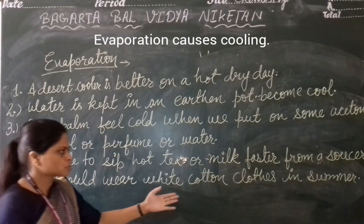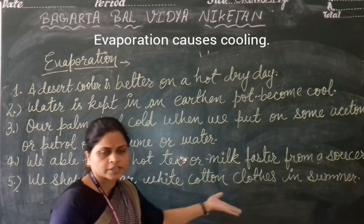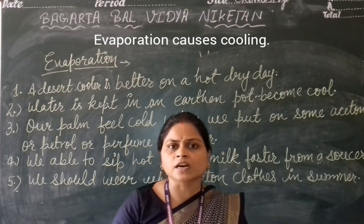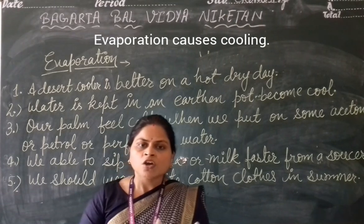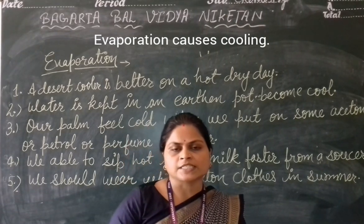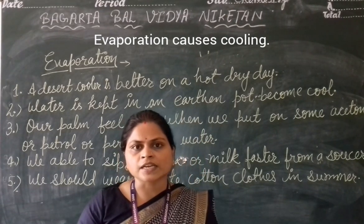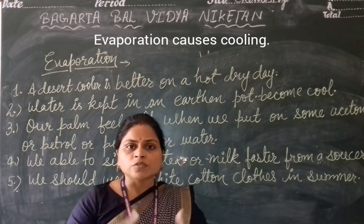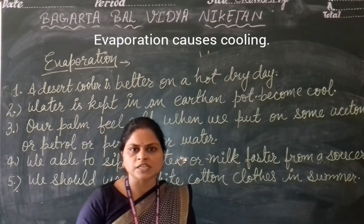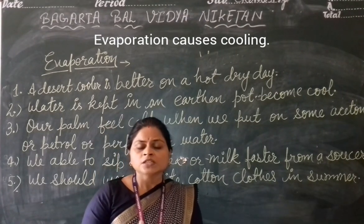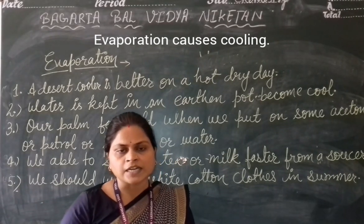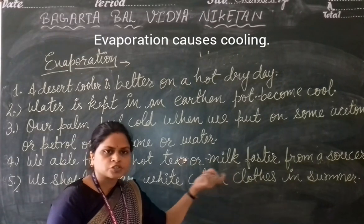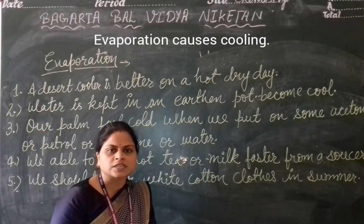The next example: we should wear white cotton clothes in summer. Cotton clothes absorb our sweat. After absorbing the sweat, the sweat evaporates from the cotton fabric. Because cotton cloth has tiny pores, evaporation is very fast, and this makes us feel cool in warm weather.